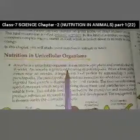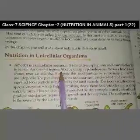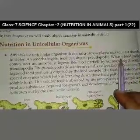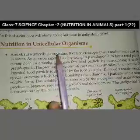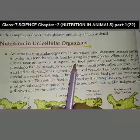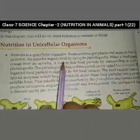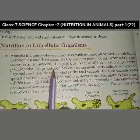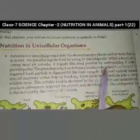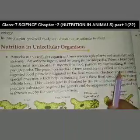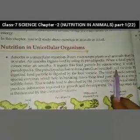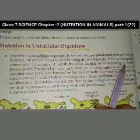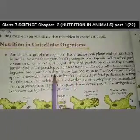An Amoeba ingests food using pseudopodia. When a food particle comes near an Amoeba, it surrounds the food particle with its pseudopodia. The pseudopodia close to form a small cavity called the food vacuole, which ingests the food particle and then digests it.